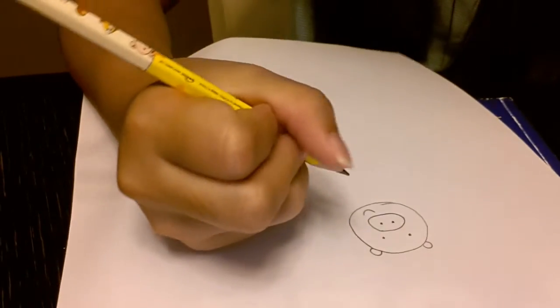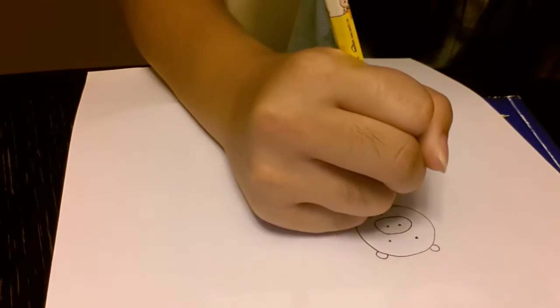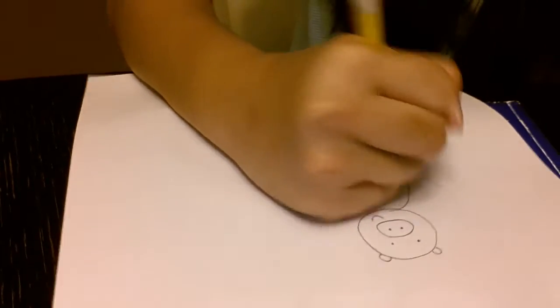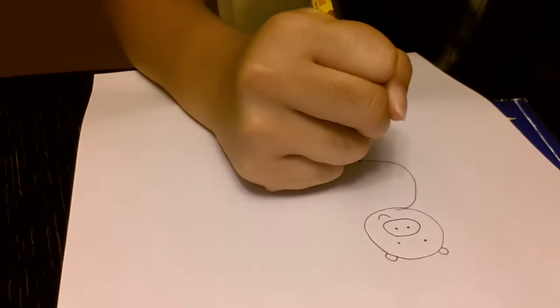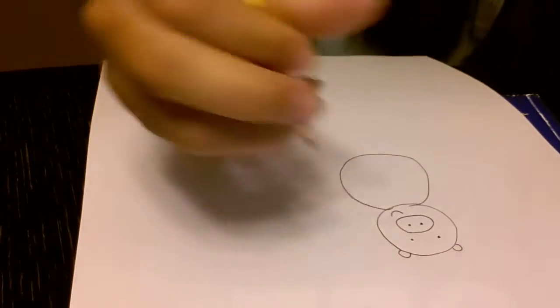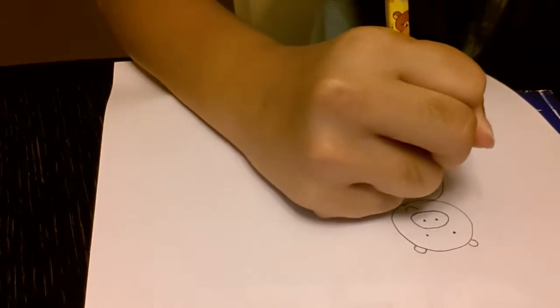After that, you draw the body, which is another circle. Like this. And then you draw the inside circle.